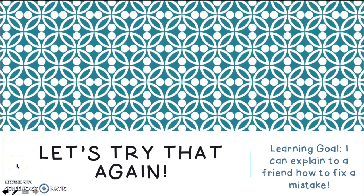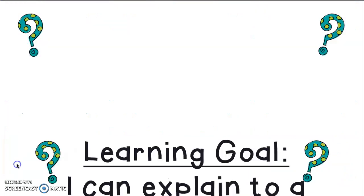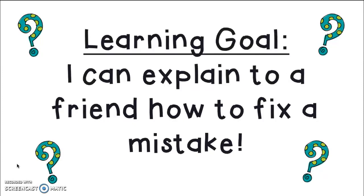Hi friends. Today's activity is called Let's Try That Again. I have a bit of a problem today and I'm hoping you can help me out. I have two kiddos in my class who are having the worst time with math. One of them always gets a problem correct, but the other one always gets it wrong. Then they argue with one another about who is right. I've tried to help them and I don't know what to do. You came to mind because you're really strong in math. My learning goal for this would be I can explain to a friend how to fix a mistake. Do you think you can do it?